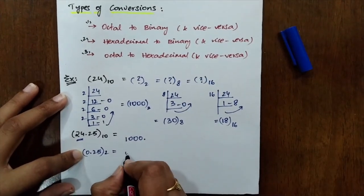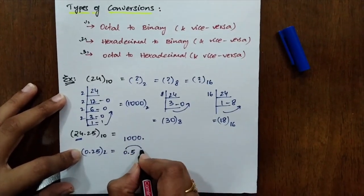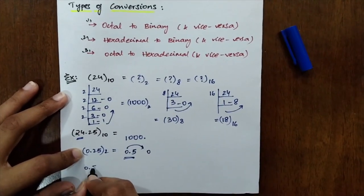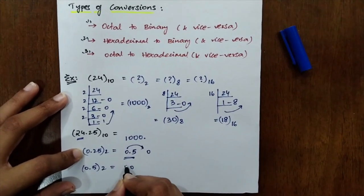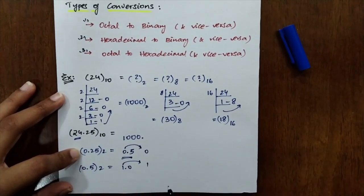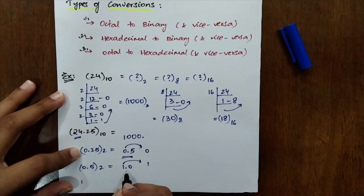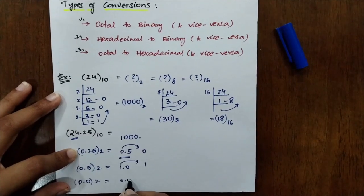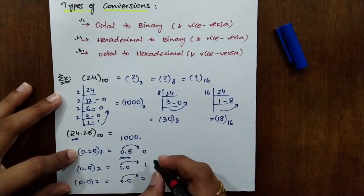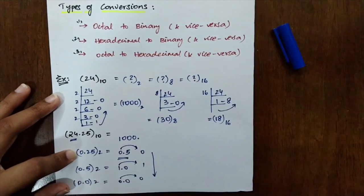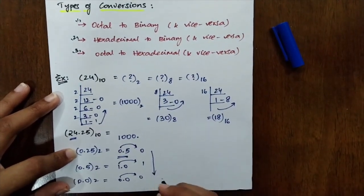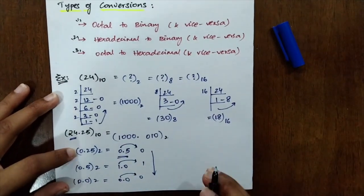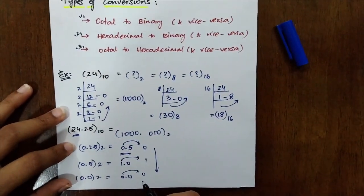Like how? 0.25 into 2. What you will be getting? 0.5. Now try considering only the integer part, which is 0. Again, this 0.5 should be multiplied back with 2, which is 1.0. Again, take only the integer part, which is 1. And again, the ones left after the decimal 0.0 into 2 equals to 0.0, which is 0. And for this one, you have to be going in the upward to downward direction. So the decimal points can be taken as 010 in this binary form.